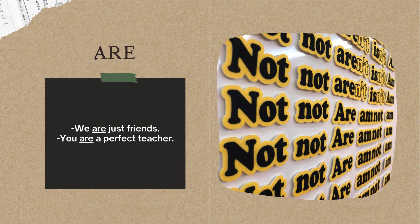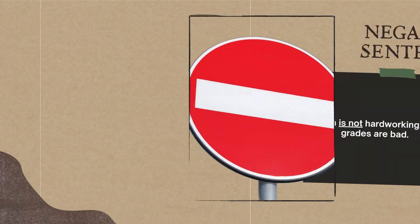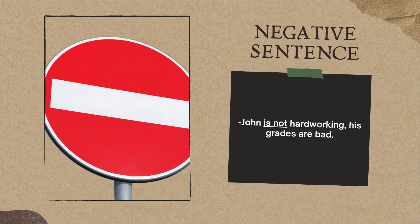Using am, is, are in interrogative sentences and negative sentences. Most of the examples we have given so far have been positive sentences, but it is also possible to make interrogative sentences and negative sentences with am, is, are. These structures change depending on the time we use them, but basically they are quite similar and simple.